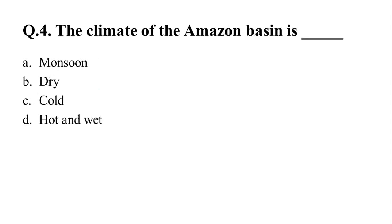Your fourth question is: The climate of the Amazon Basin is — A. Hot and wet, B. Dry, C. Cold, D. Moderate. And your right answer is Option D: Hot and wet.